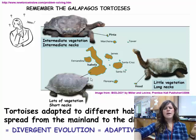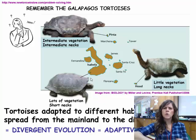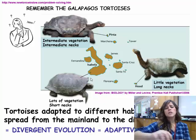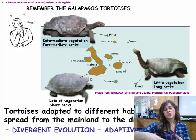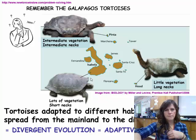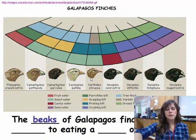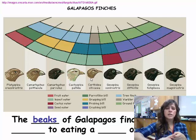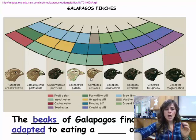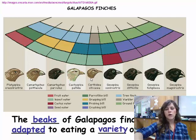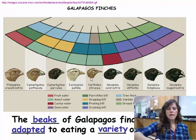We have divergent evolution, which equals adaptive radiation. Here are the beak sizes of the Galapagos finches. Darwin studied tortoises and finches, specifically the beaks of the finches. He saw that they adapted to eating a variety of different kinds of foods, and their beaks were different based on the foods that they ate.